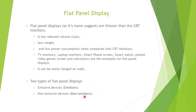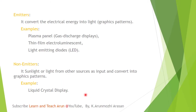Flat panel displays are divided into emissive and non-emissive devices. An emissive device converts electrical energy into light — electrical energy is the input and the graphics pattern is the output. This type of device is called an emitter.